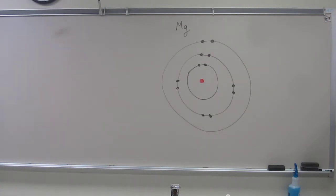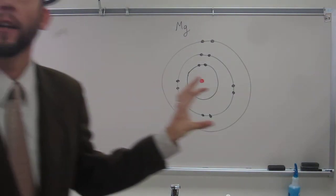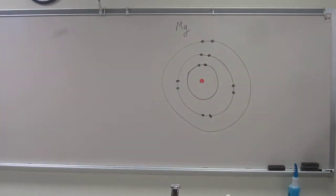So recall what we said, that atoms are stable when what? When is an atom extremely stable? When its shell is filled. When its what shell is filled? Outer or valence shell is filled, right? Is magnesium's valence shell filled right now? No. Why not? It has to have eight electrons in it, but it only has two in it.